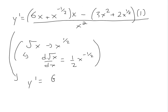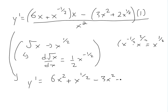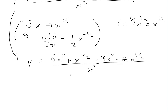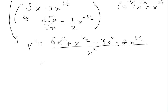Expanding and simplifying the numerator: we get 6x squared plus x to the one-half, minus 3x squared minus 2x to the one-half. Combining like terms: 6x squared minus 3x squared gives 3x squared, and x to the one-half minus 2x to the one-half gives negative x to the one-half. So the numerator simplifies to 3x squared minus x to the one-half, all divided by x squared.